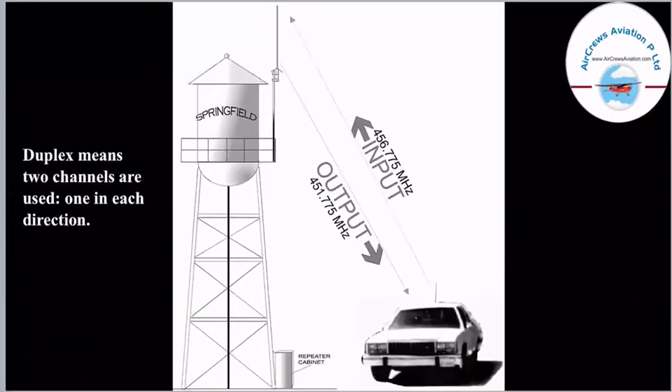This is how voice transfer works in duplex mode, meaning two channels are used — one in each direction. Here we can see the input signaling as well as the output signaling, through which a repeater cabinet is used to transfer the signal from one form to another.